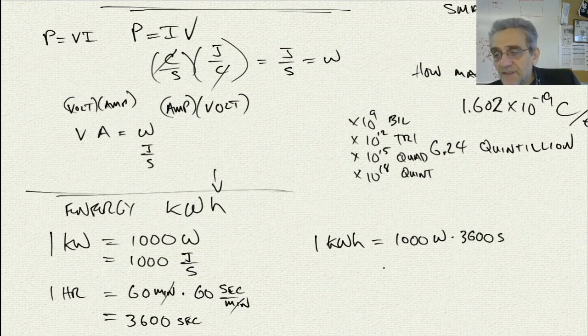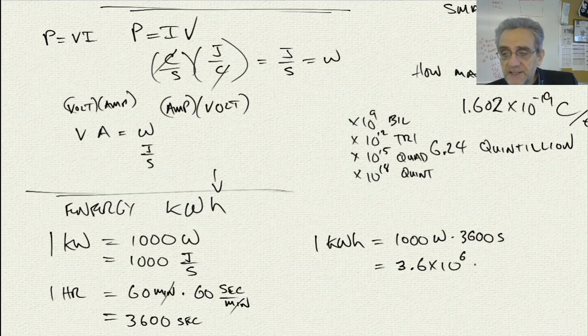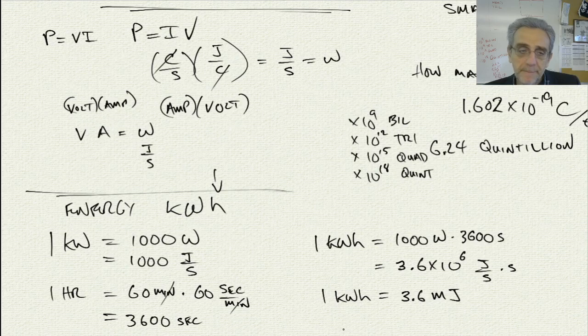And that's going to give us 1,000 times 3,600. That's 3.6 million. 3.6 times 10 to the power of 6. And the units for that is joules per second times seconds, which gives me joules. Or 3.6 megajoules. That's 1 kilowatt hour.